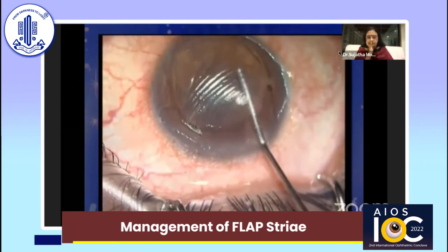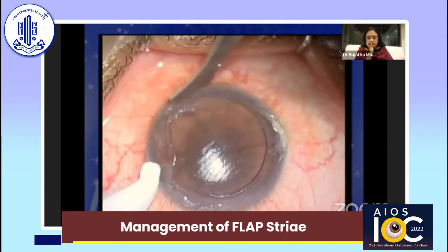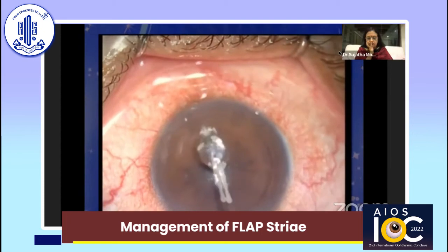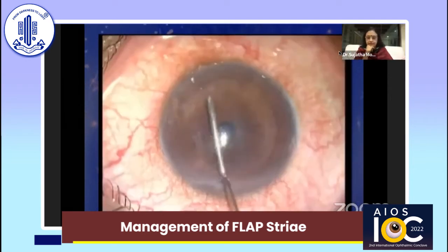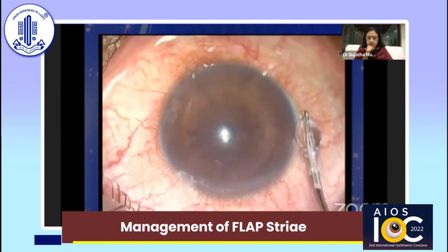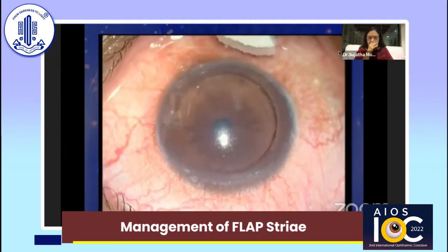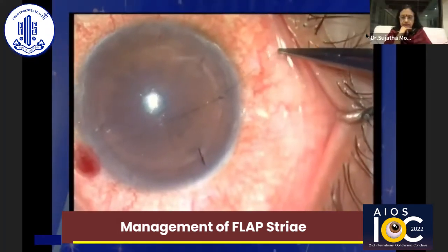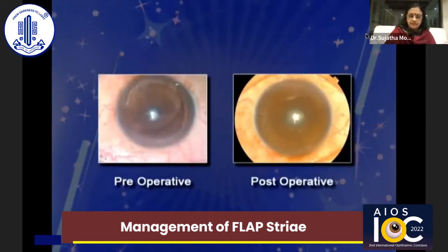The folds in the flap can best be addressed by removal of epithelium on the surface, so the epithelium is completely removed on the flap surface as well. The flap folds are stretched using two dry Merocel sponges. The bed is washed to remove epithelial nests, the flap is replaced and smoothened with a wet sponge. Four 11-0 nylon sutures and one 10-0 nylon suture were applied to keep the flap in position, then a bandage contact lens is placed. The post-operative picture shows a smooth flap with a good return of visual acuity.